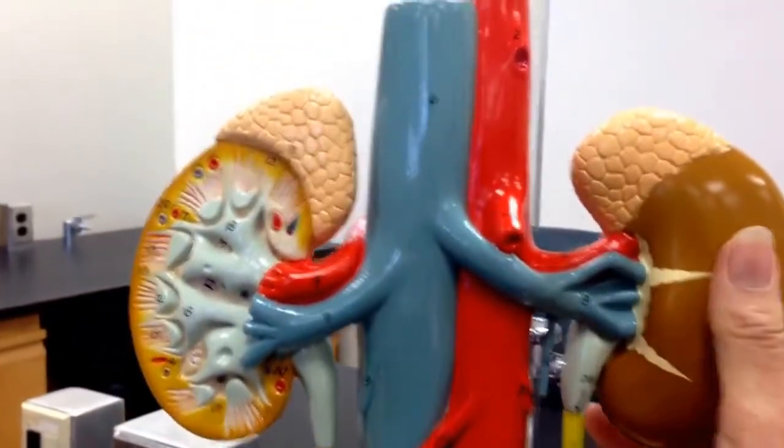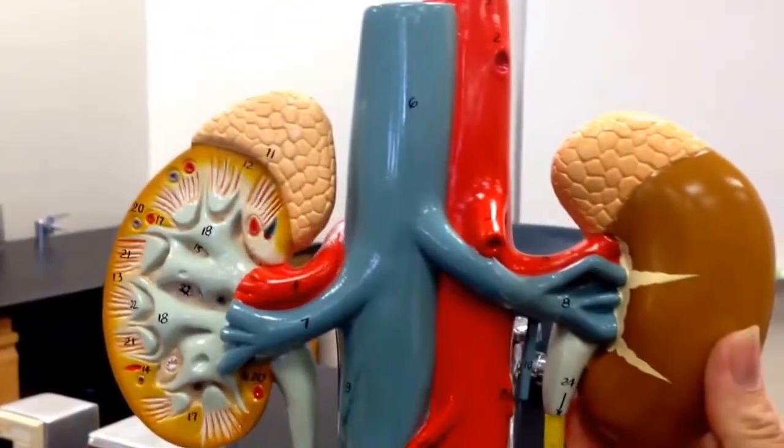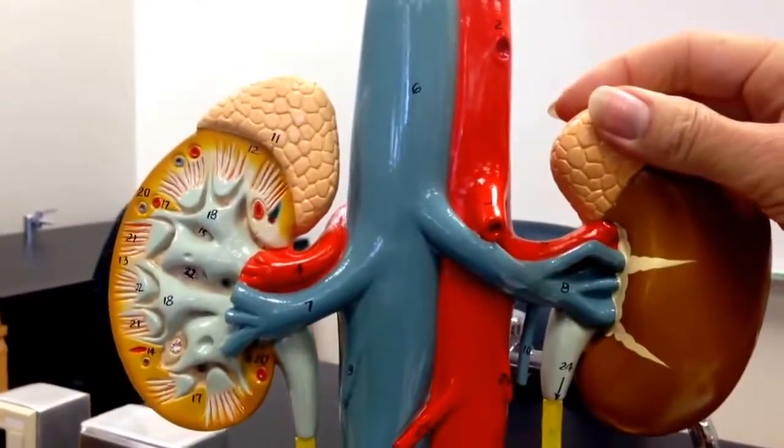Let us start with the kidneys. Here we have the kidneys. On top we have the adrenal glands.